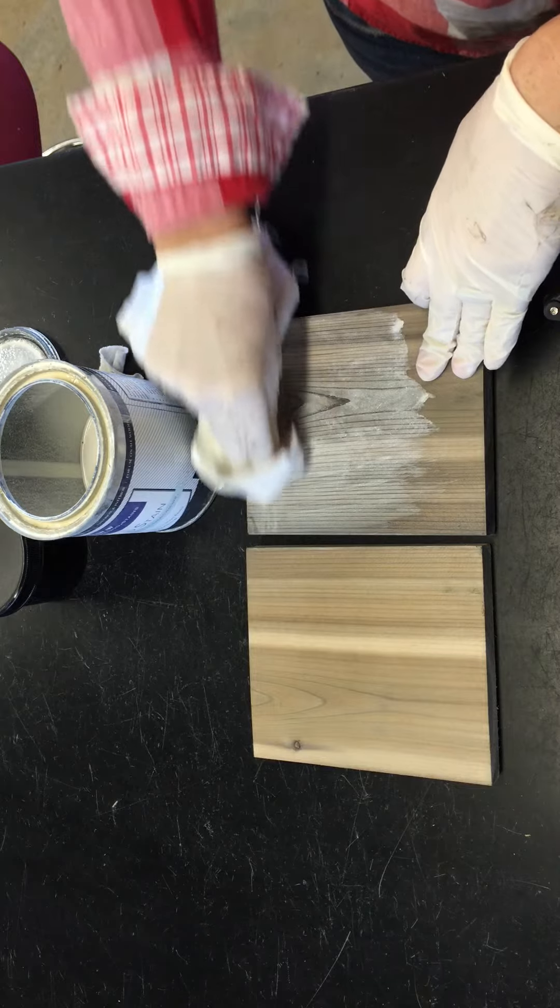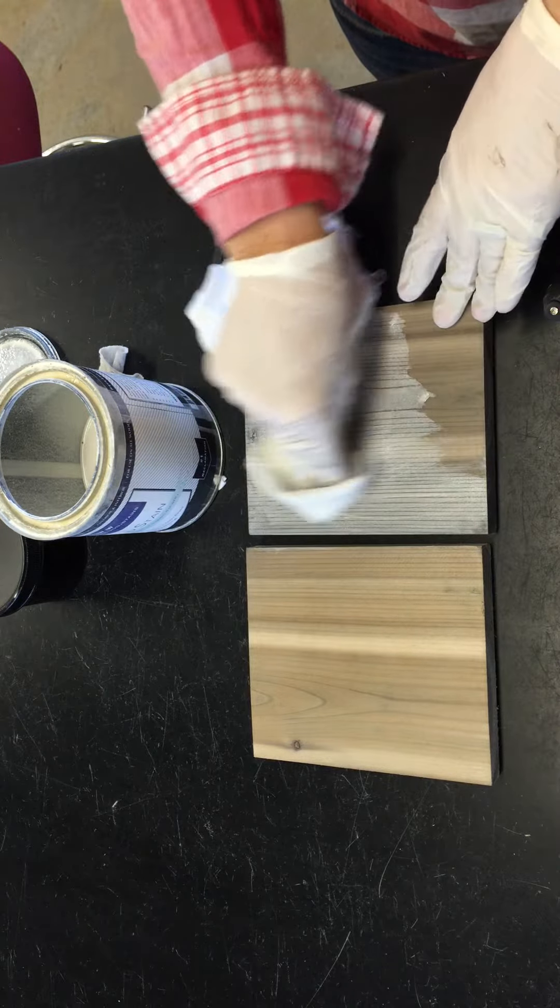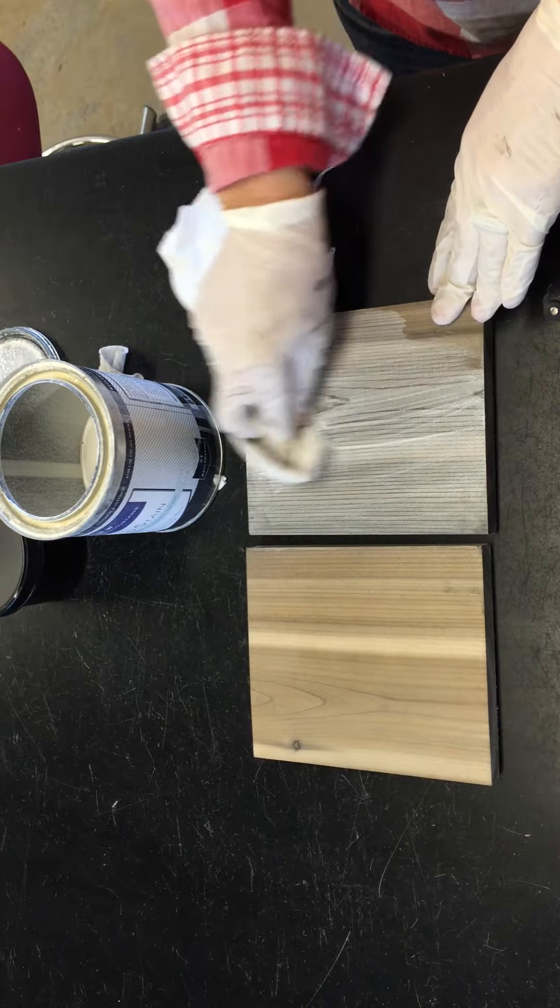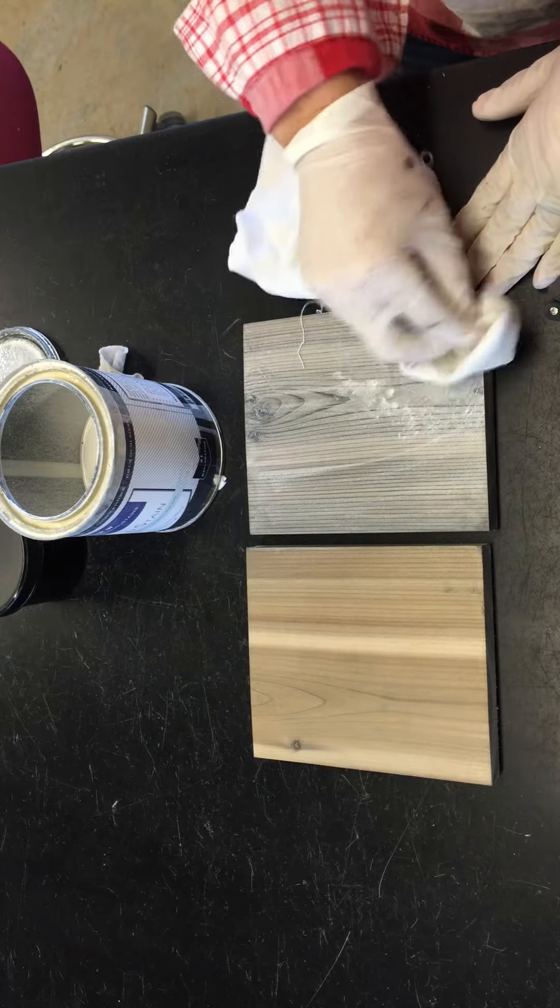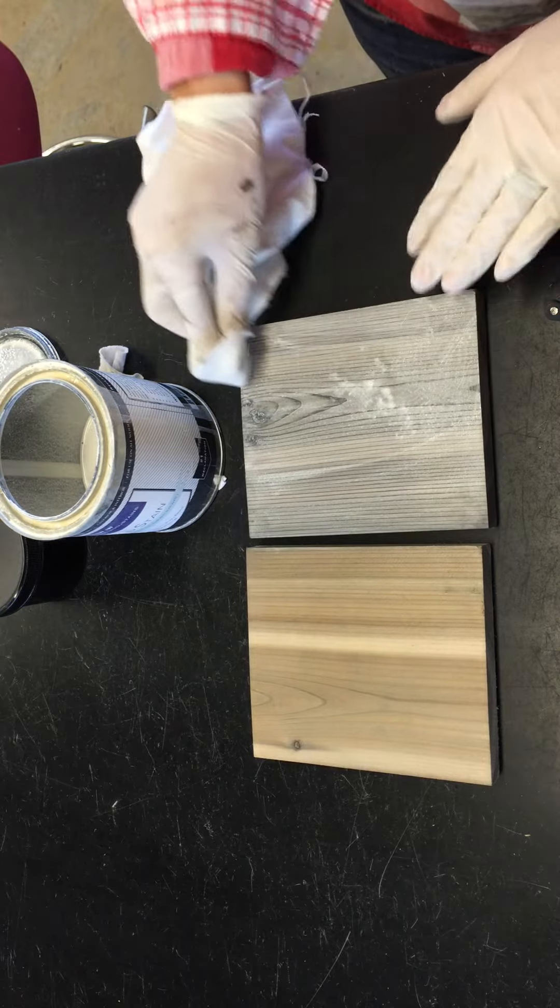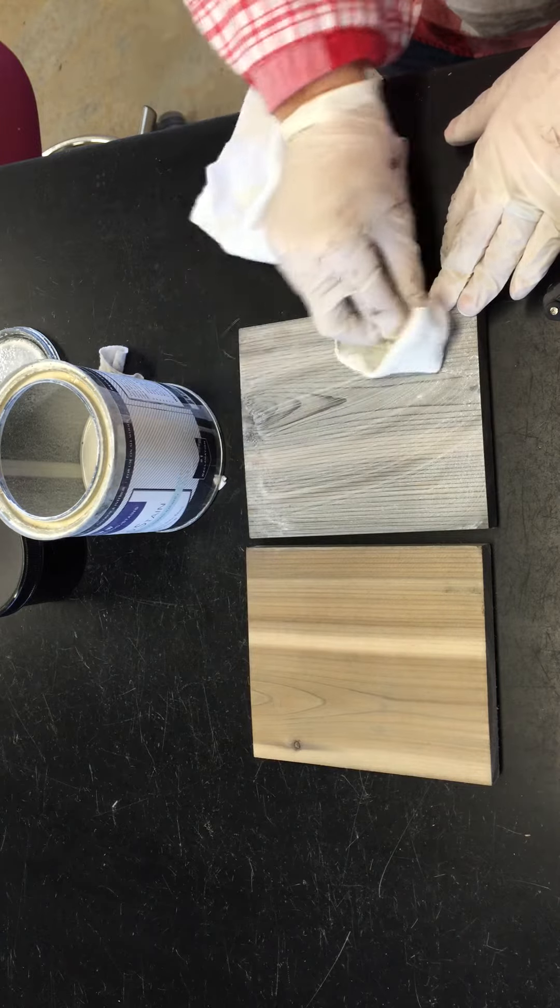So this sample that I'm showing you right here is a reclamation red cedar sample, just regular old Home Depot red cedar stained with our reclamation product. The product has dried, it's been about an hour, and now I'm top coating it with this particular top coat.